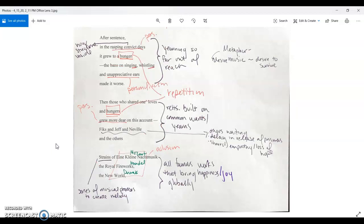The next stanza talks about the hungers again and how he built relationships based on these wants and these yearns with other people who were there waiting in limbo just how he was. They had a shared empathy and kind of a loss of hope, but on the flip side they could find joy through the music.